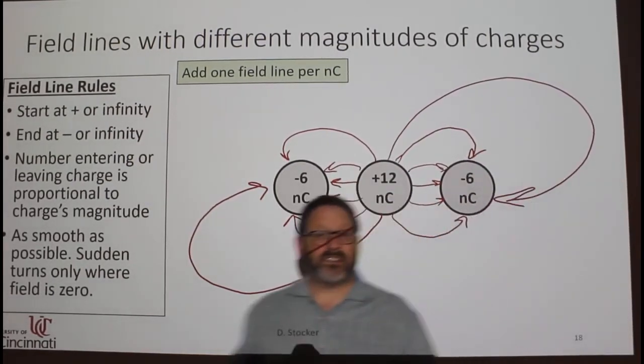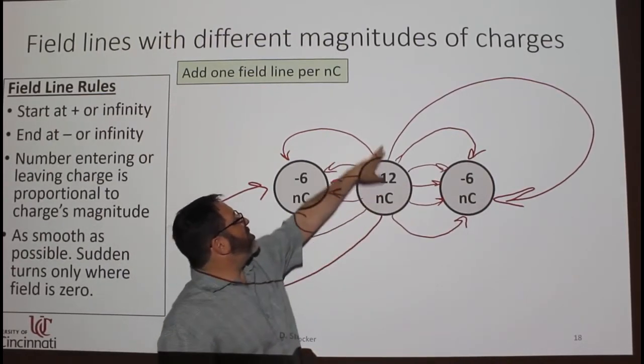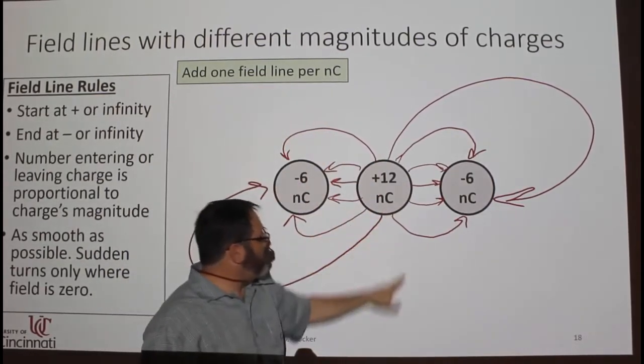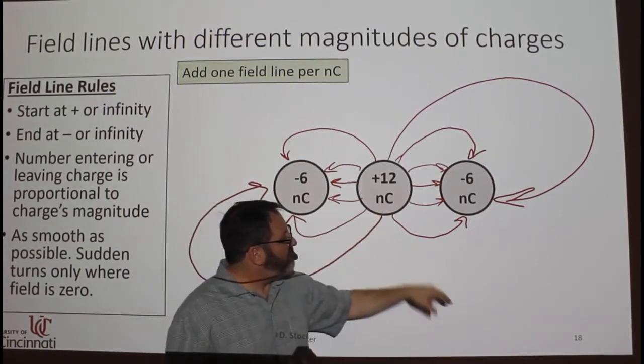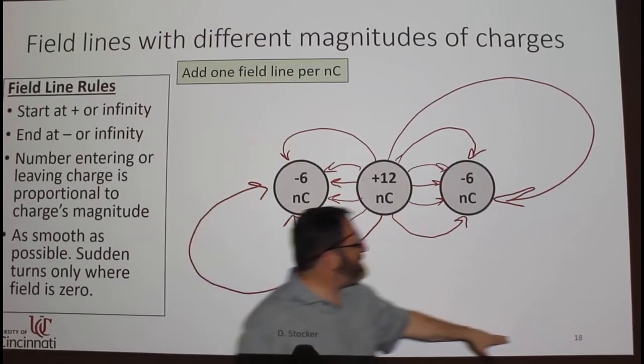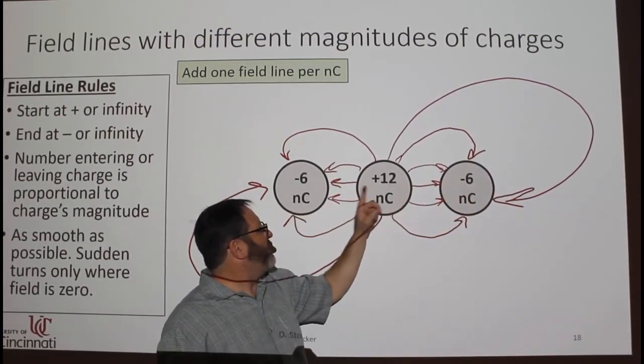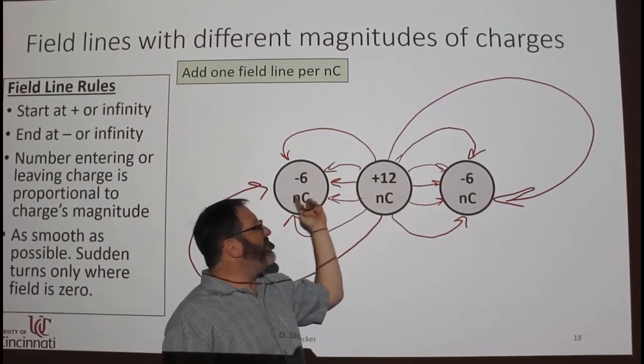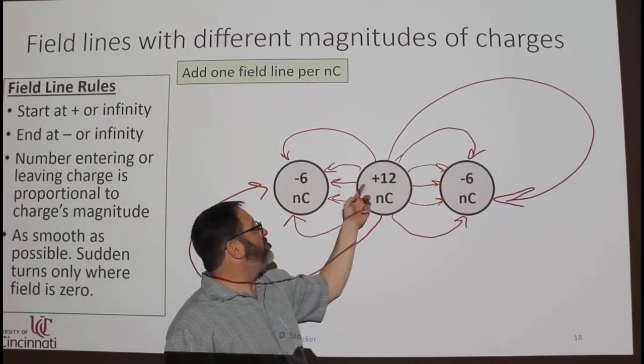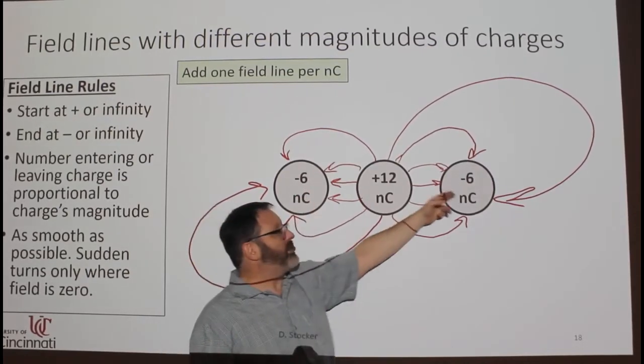So, these are just representative field lines. You could draw more out this way, more filling here. Basically, every field line that leaves this one has to come back onto one of these because this has to have 12 coming out, and each of these has to have six. So, for every line that comes out of here, there has to be a line going into one or the other of these.